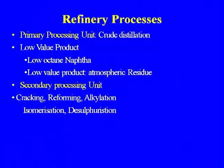The secondary processes used in the refinery include cracking of heavy residue — either thermal or catalytic — reforming of low-octane naphtha to gasoline to increase the octane number, alkylation, isomerization, and desulfurization to remove sulfur compounds. Hydrodesulfurization is also done to improve product quality so that sulfur and nitrogen compounds do not poison the catalysts.